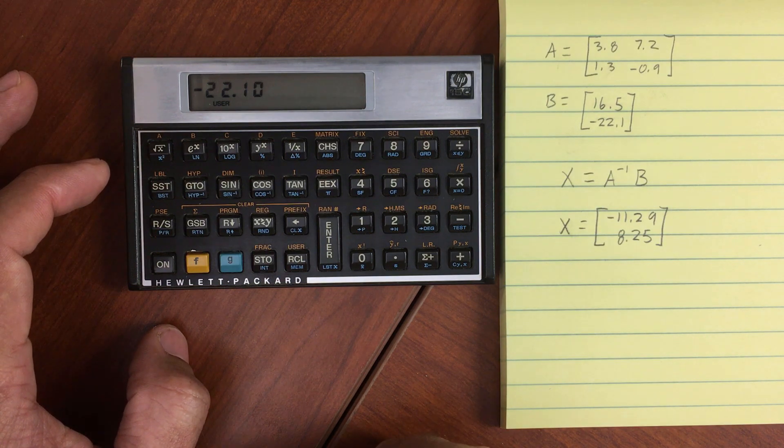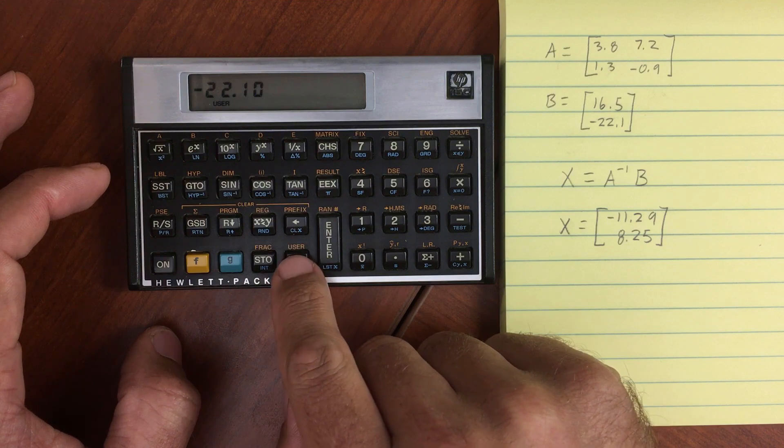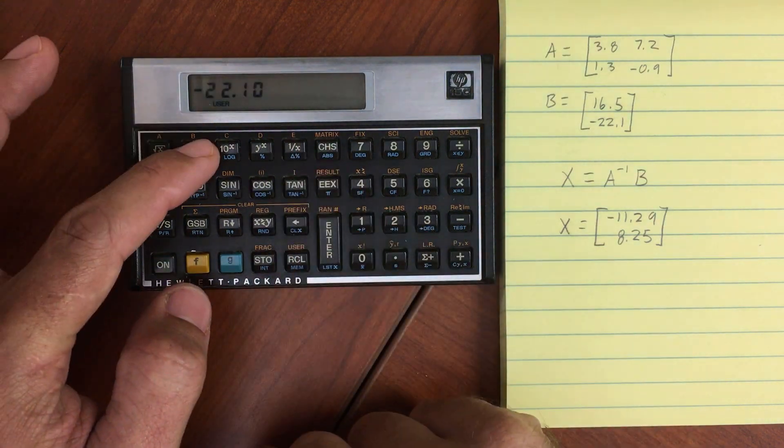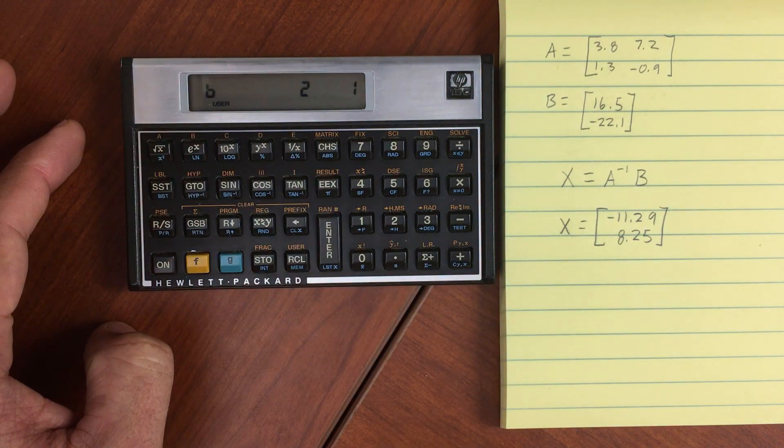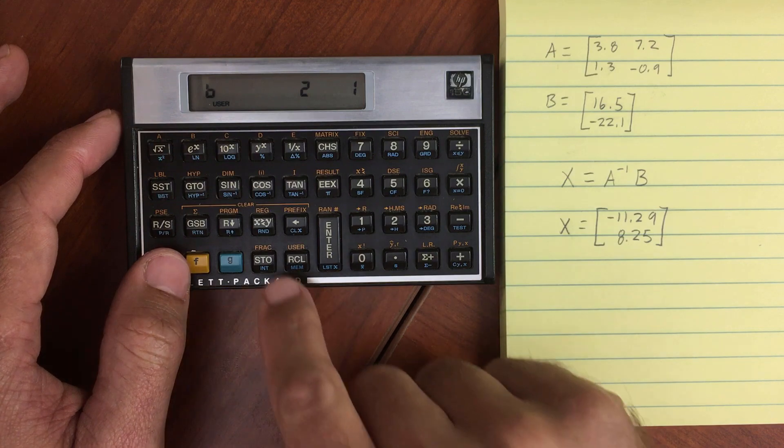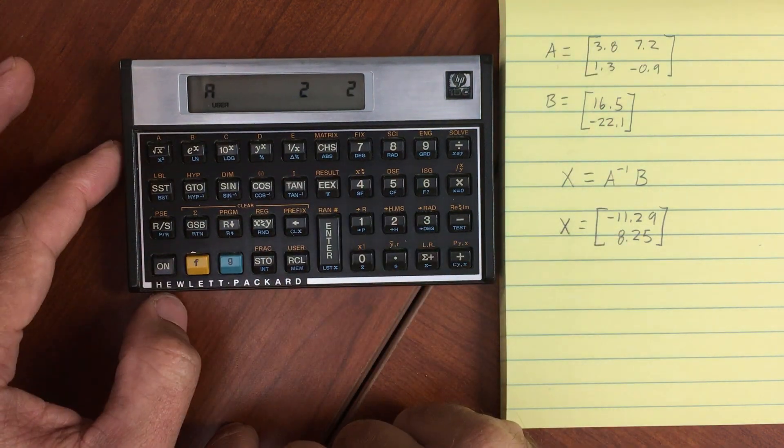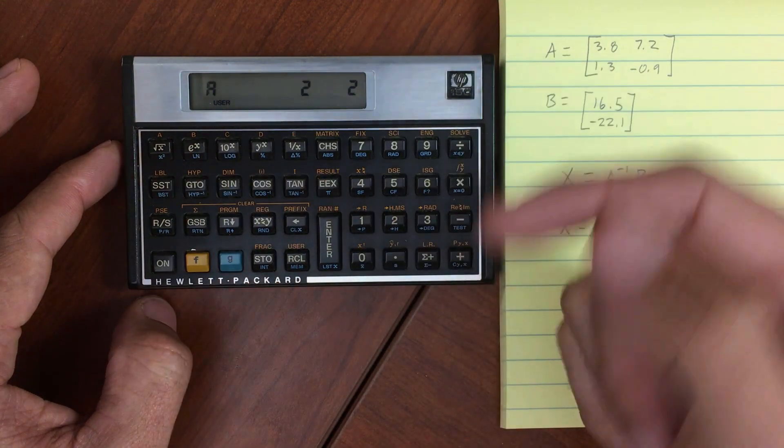So now what we need to do is recall that matrix into the stack. So we're going to recall and then do matrix B. And this shows us we have a matrix B of dimensions 2,1. And then we will recall matrix A. We have matrix A in there of dimensions 2,2. And let's divide B by A.